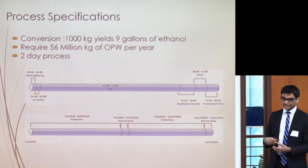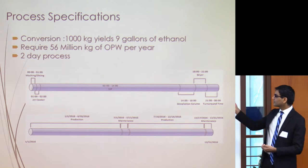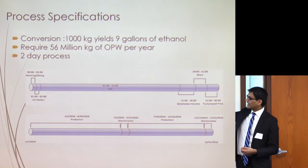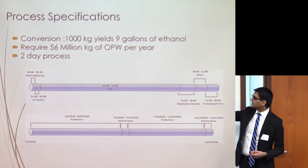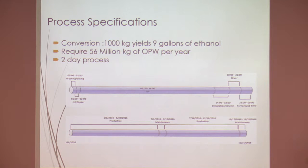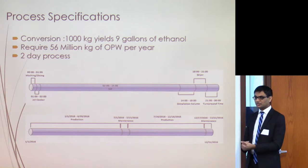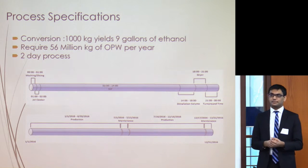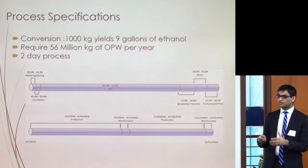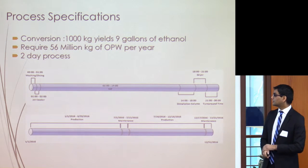Our schedule shows the two-day process from beginning to end with the time each step takes. For our yearly schedule, we plan on running the plant for about 24 weeks straight, from January through July. After that, we have a two-week downtime maintenance period for repairs and upgrades, then we run again all the way until the end of December, where we again have a two-week maintenance period.